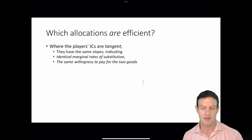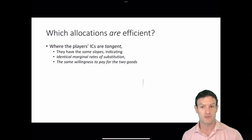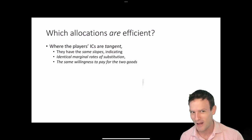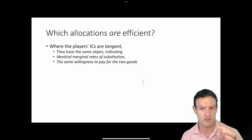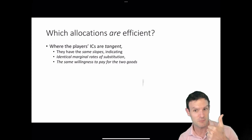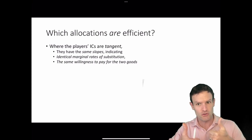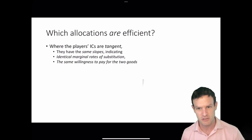The Pareto efficient allocations are the ones that occur where the players' indifference curves are tangent, meaning they have the same slopes. When they have the same slopes, they have identical marginal rates of substitution: Ianda's MRS of Y for X equals Biko's MRS of Y for X, and therefore they have identical willingness to pay.